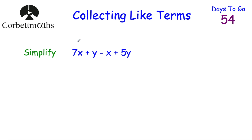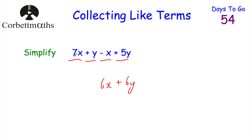Next question: simplify 7x + y − x + 5y. Let's deal with each letter separately. For the x's: 7x − x = 6x. For the y's: y + 5y = 1y + 5y = 6y. So the answer is 6x + 6y. Well done if you got that.